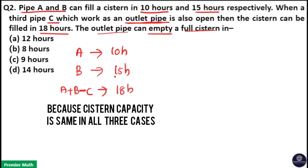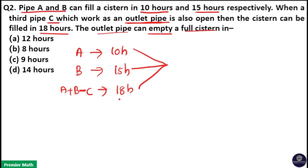Now here work is equal. That is, filling the full cistern is the complete work here. So take the LCM. LCM of 10, 15, and 18 is 90. 10 goes 9 times in 90, 15 goes 6 times in 90, and 18 goes 5 times in 90.